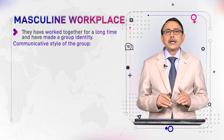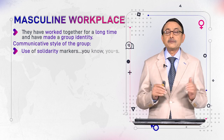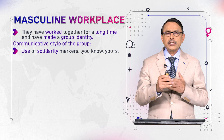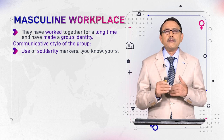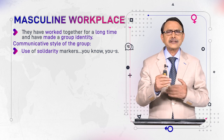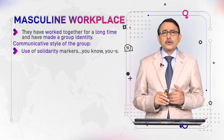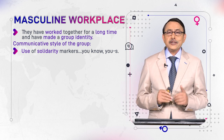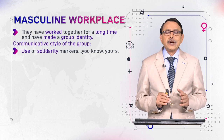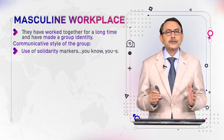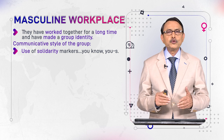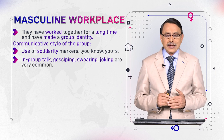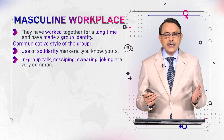So what are the features of communicative style these people adopt? Number one: use of solidarity markers — they show belongingness to the addressee. Such expressions are called markers of solidarity. They use expressions like 'you know,' and instead of singular 'you' they use plural 'you' for togetherness. In-group talk, gossiping, swearing, and joking are also common.